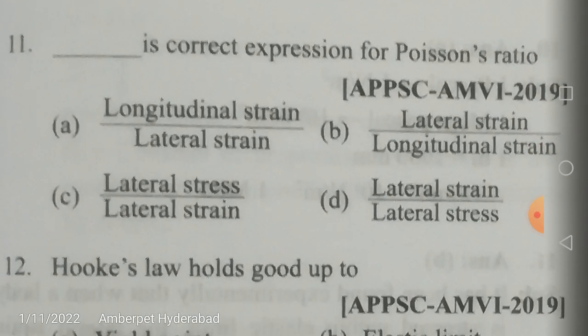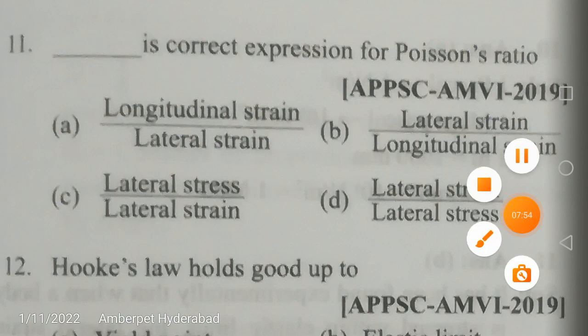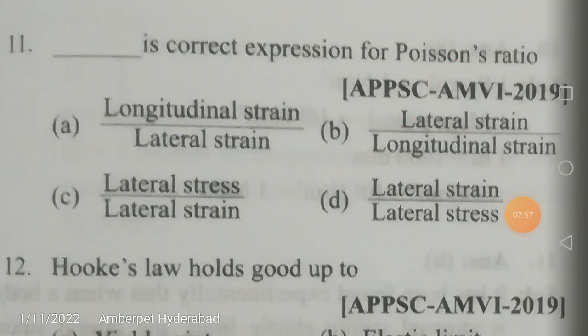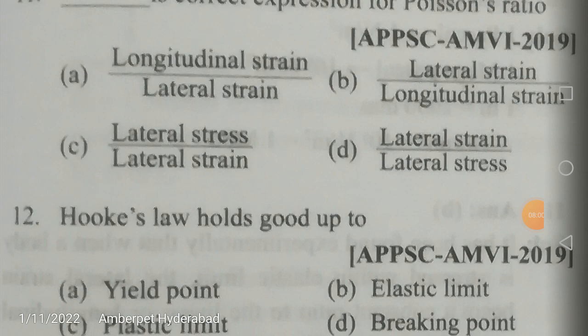The correct expression for Poisson's ratio is lateral strain to longitudinal strain. Options involving stress are eliminated since Poisson's ratio involves only strains. Option A is the reciprocal — longitudinal strain to lateral strain. The correct answer is lateral strain divided by longitudinal strain.